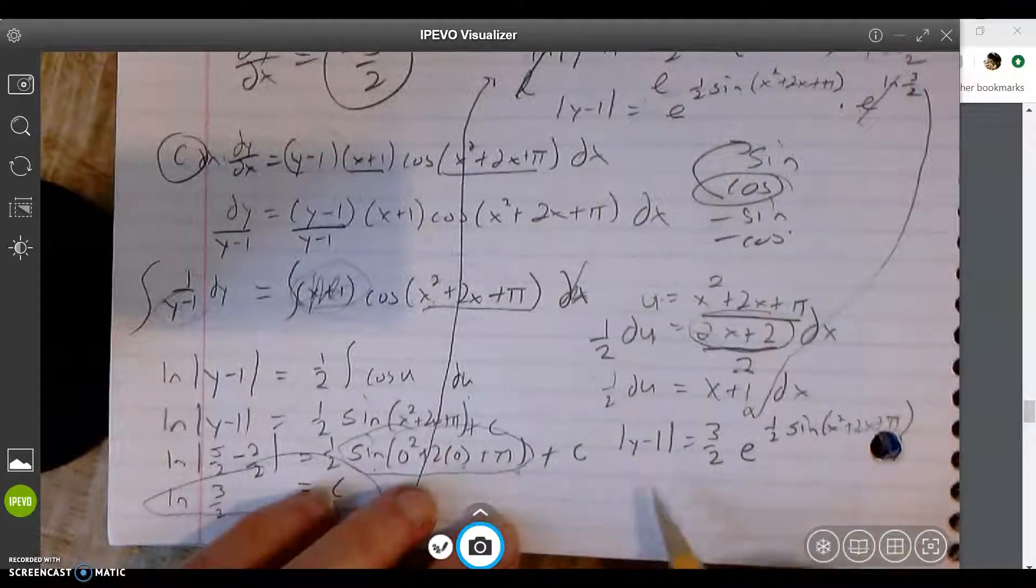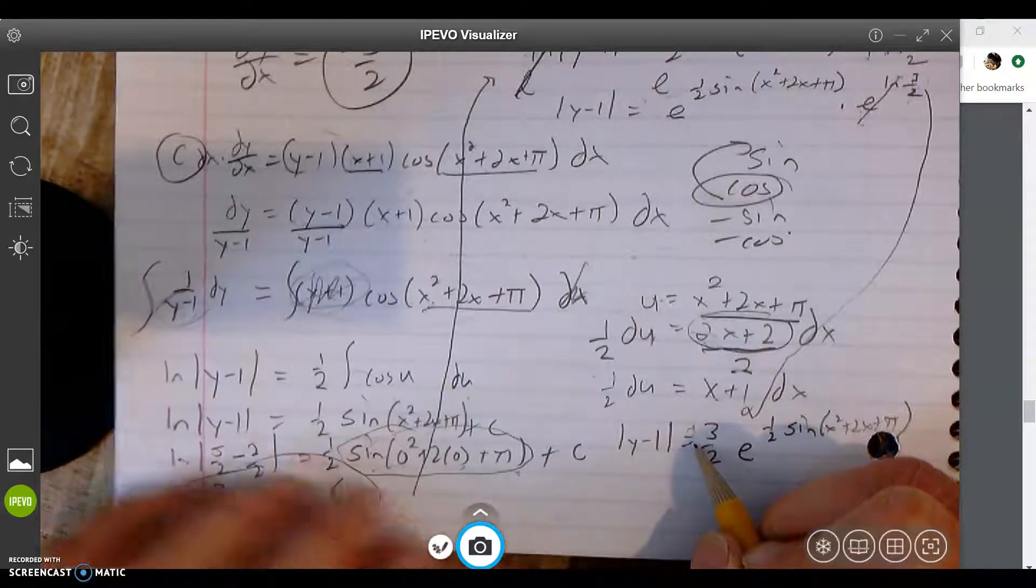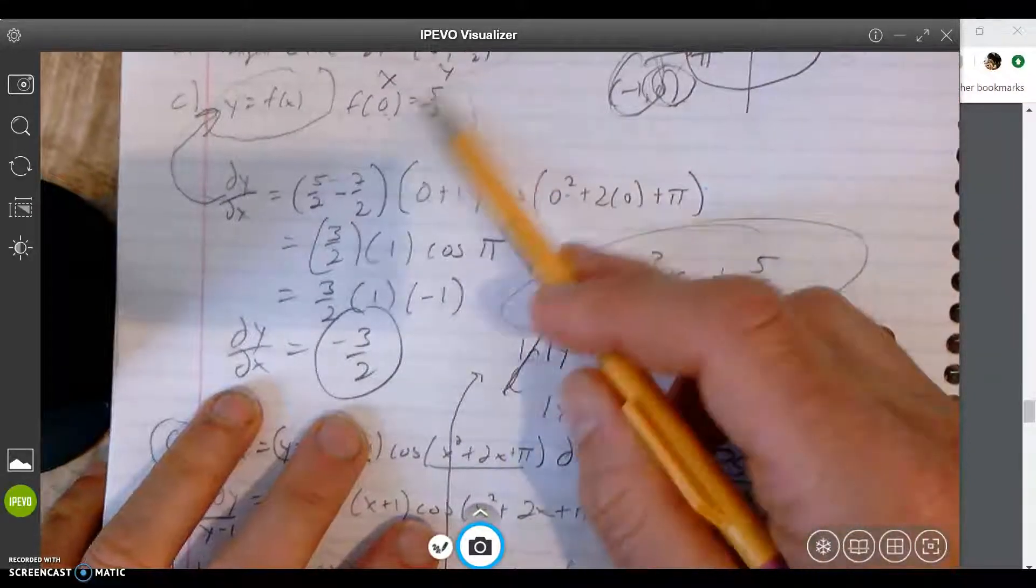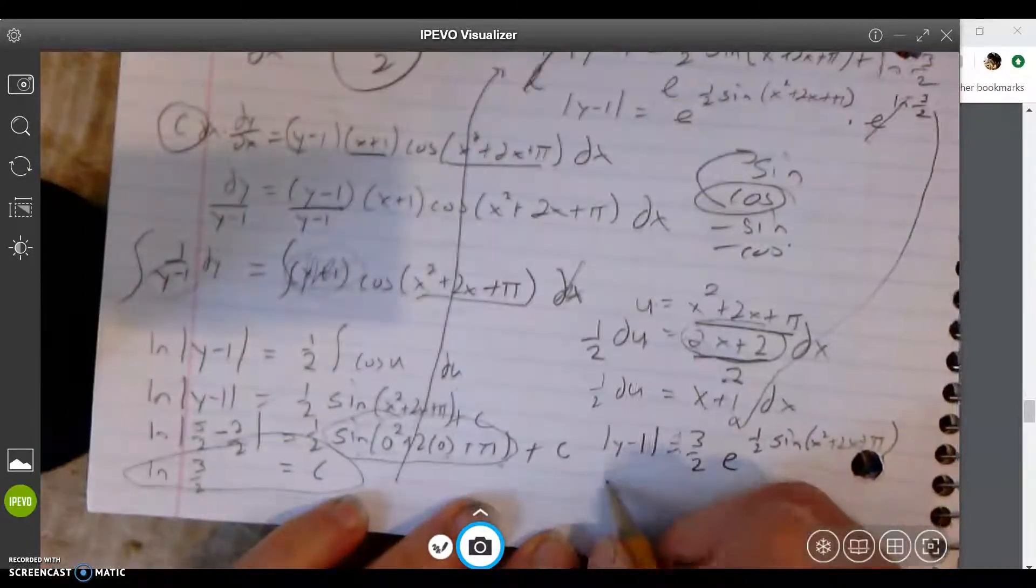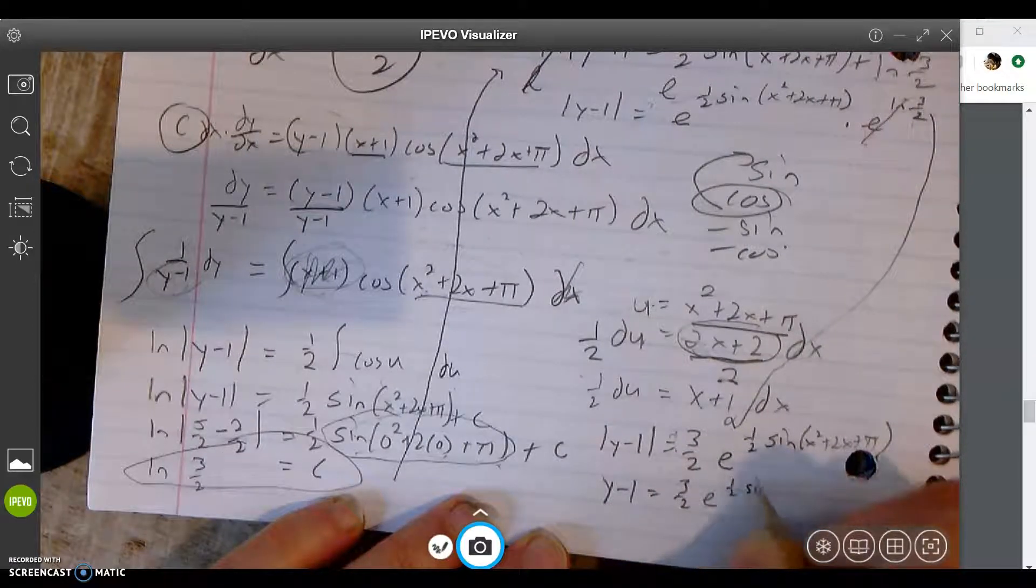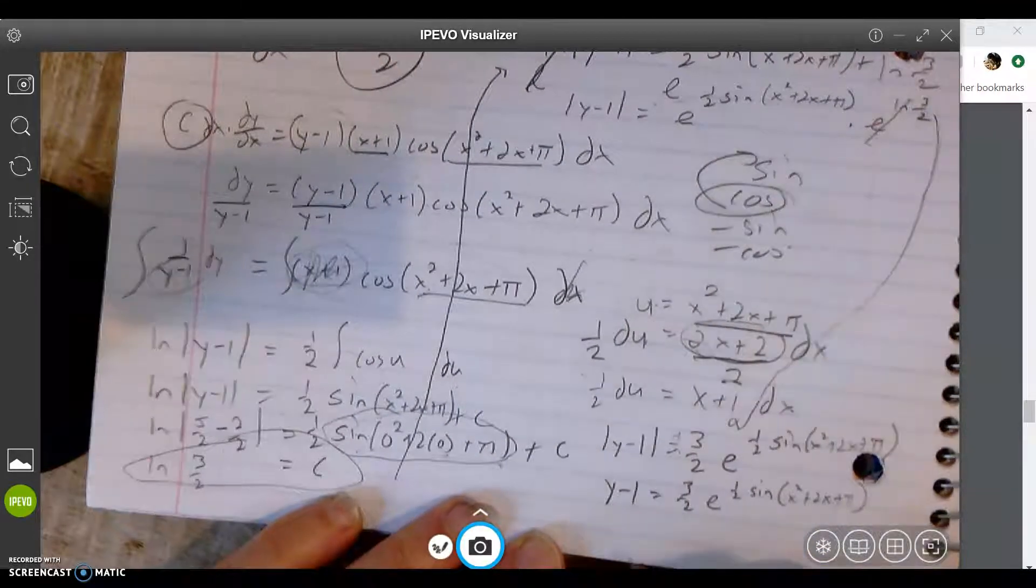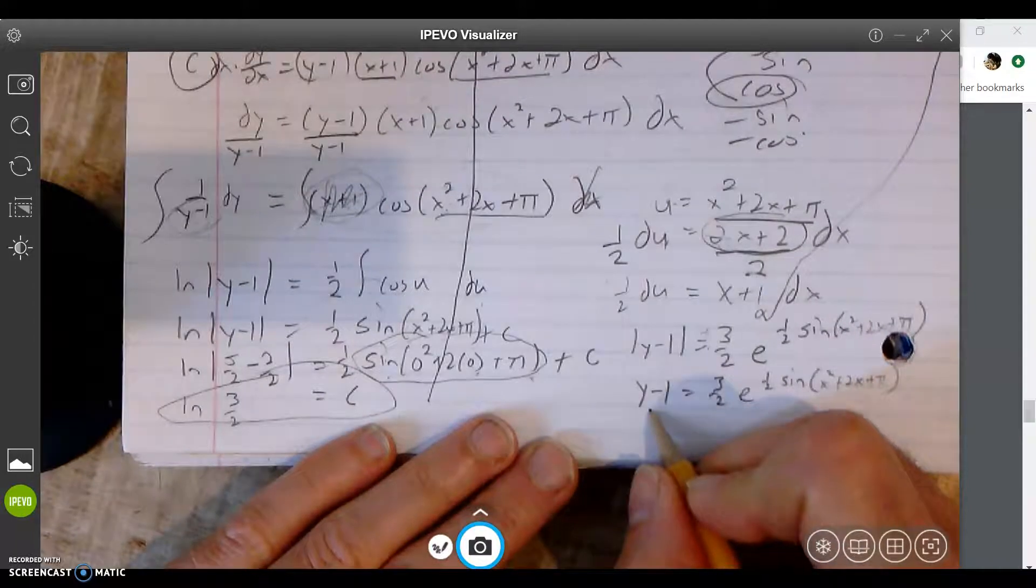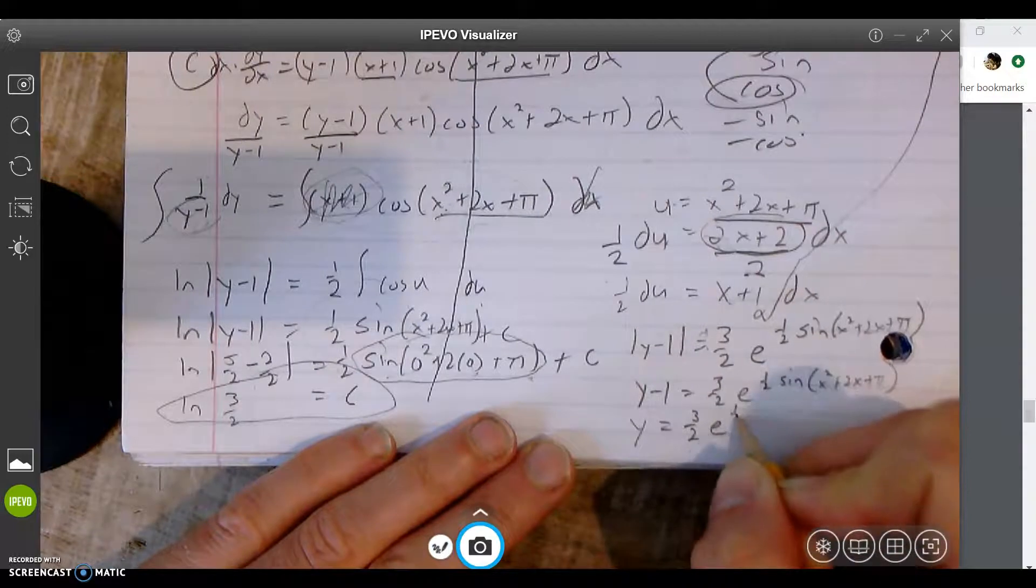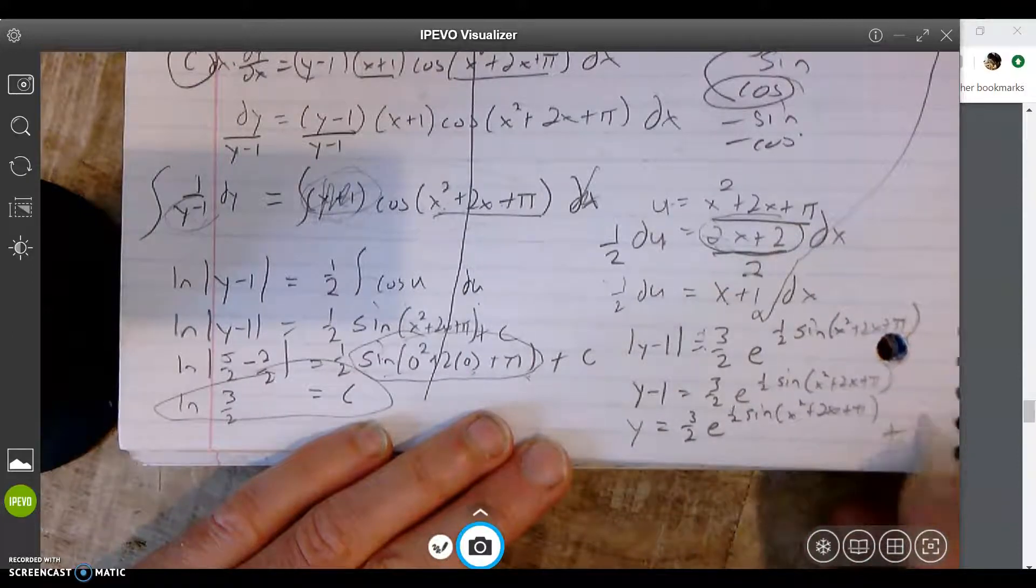Now I have |y-1| = (3/2)e^((1/2)sin(x²+2x+π)). Bam. Almost done. Absolute value - so that means this is plus or minus. Which one do I use? Yeah, I use the plus. Why? Because the y is in the positive realm right there. So y is positive. So y - 1 = (3/2)e^((1/2)sin(x²+2x+π)). And the last thing you got to do is add 1 to both sides. So y = (3/2)e^((1/2)sin(x²+2x+π)) + 1.